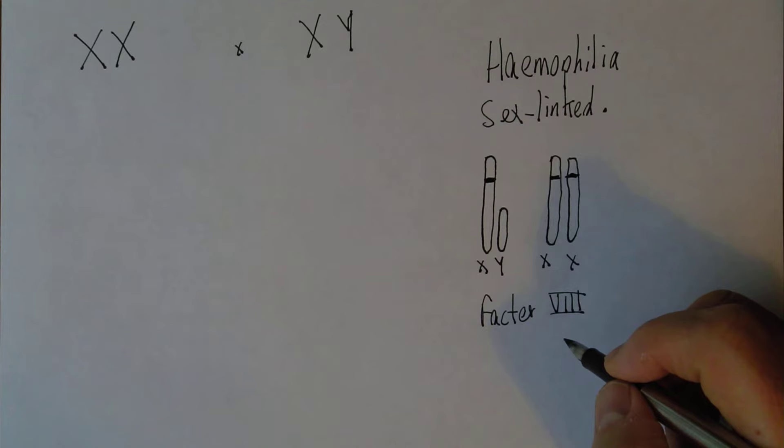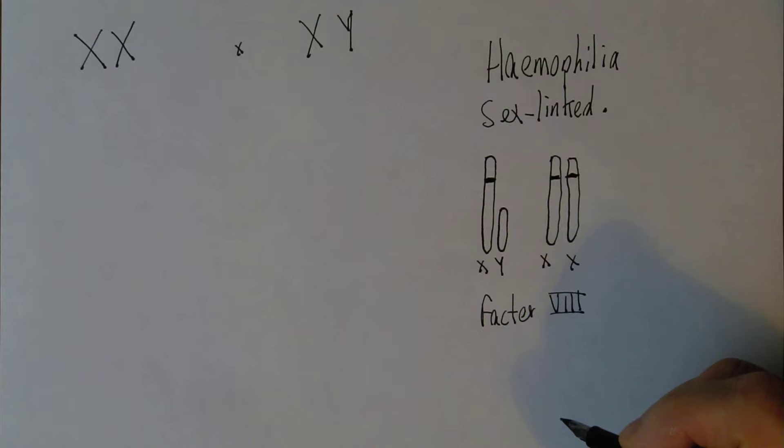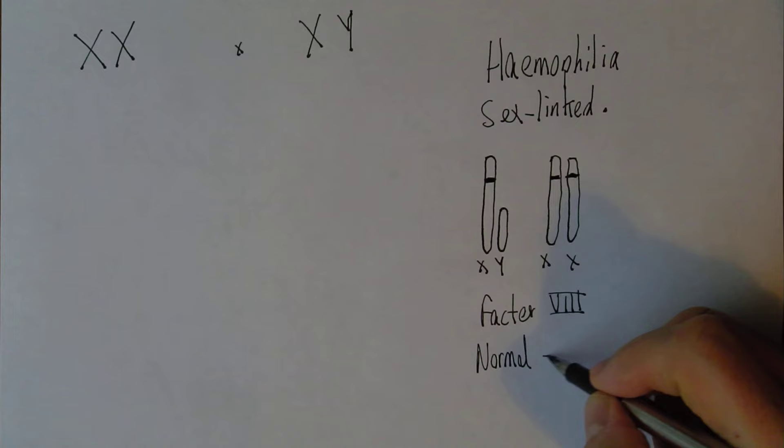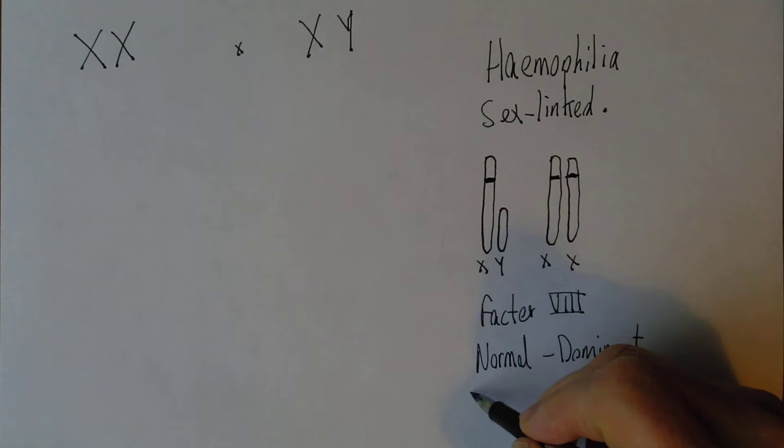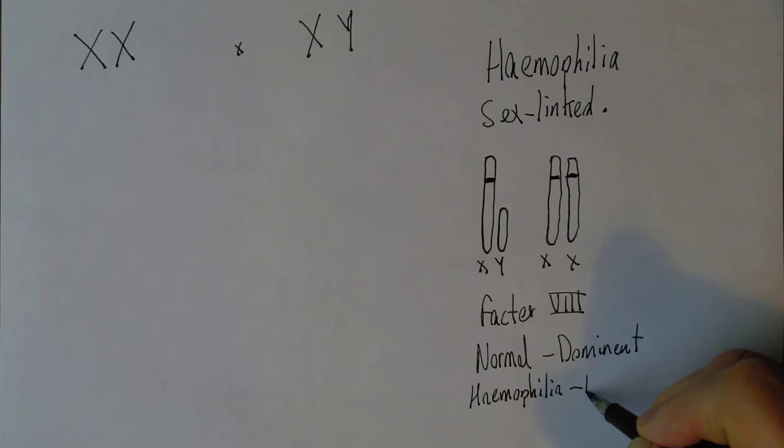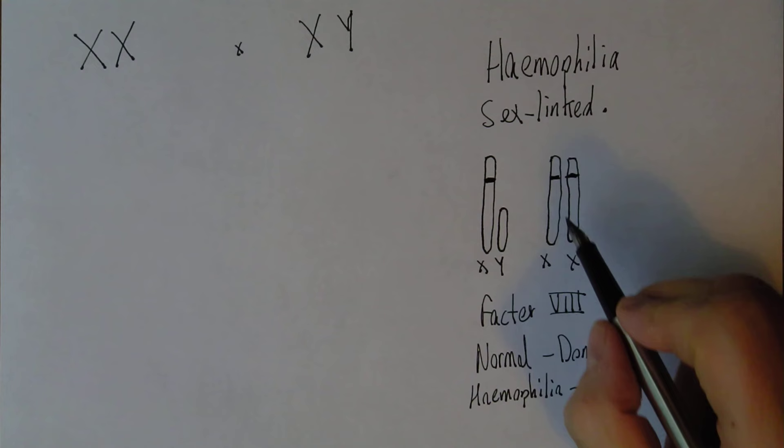Now the gene for normal clotting in this case is dominant; the haemophilia gene is recessive. This means all you need is one copy of the normal dominant gene not to have any coagulation disorder.